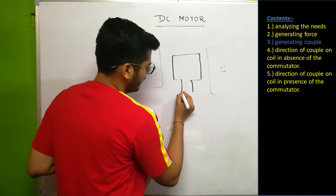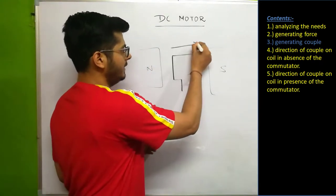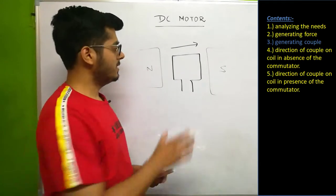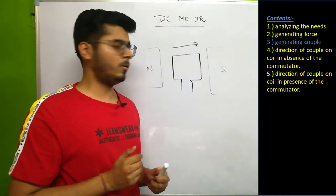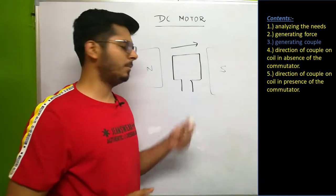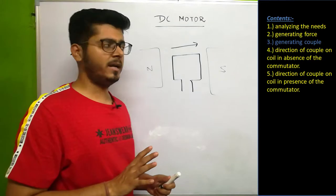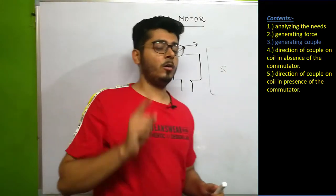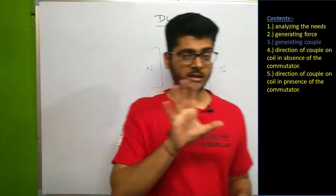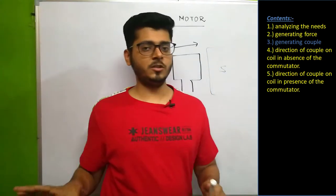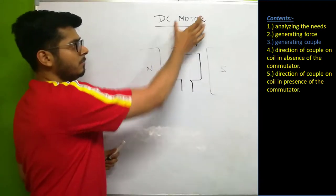If this coil is placed in a magnetic field with current flowing through it, a couple may act on it. Let's see how the couple is generated and its direction. Keep in mind: if the direction of couple is always the same, the body will rotate and work as a motor. The direction of couple should never change.